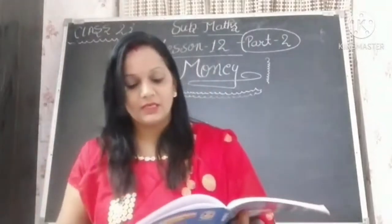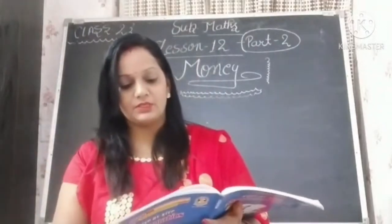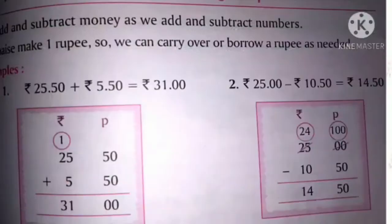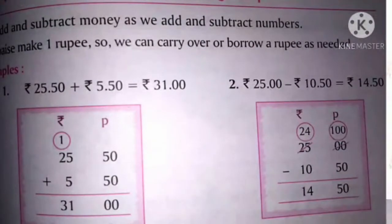For example, we have a chart which shows 25 rupees and 50 paisa, and 5 rupees and 50 paisa. The number and the money work the same way — we call this money counting, and this is very easy for you.